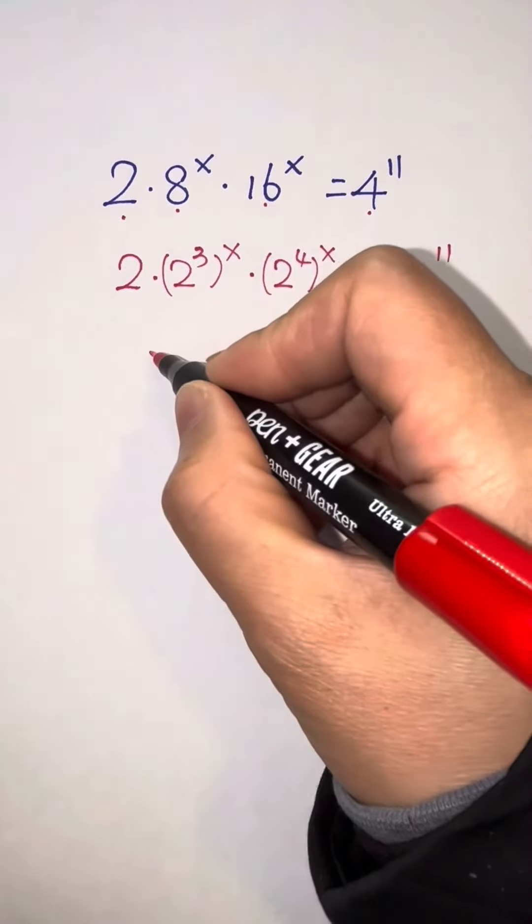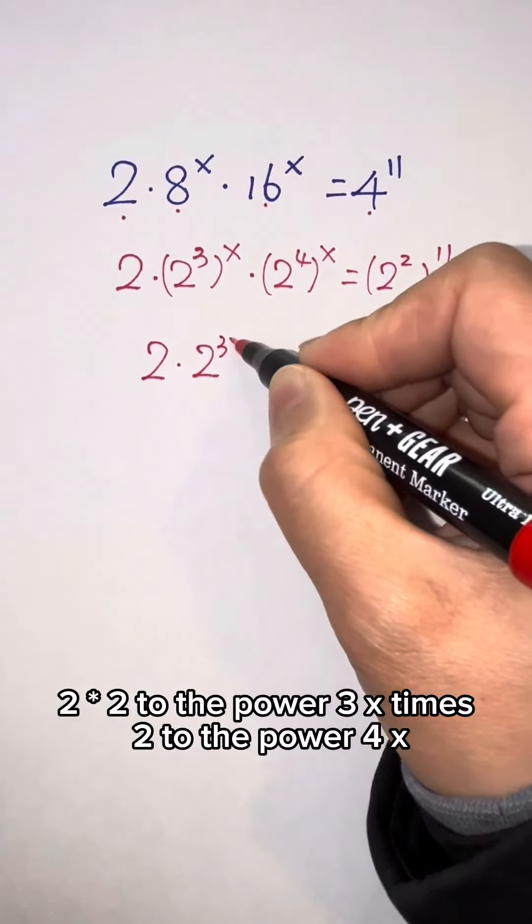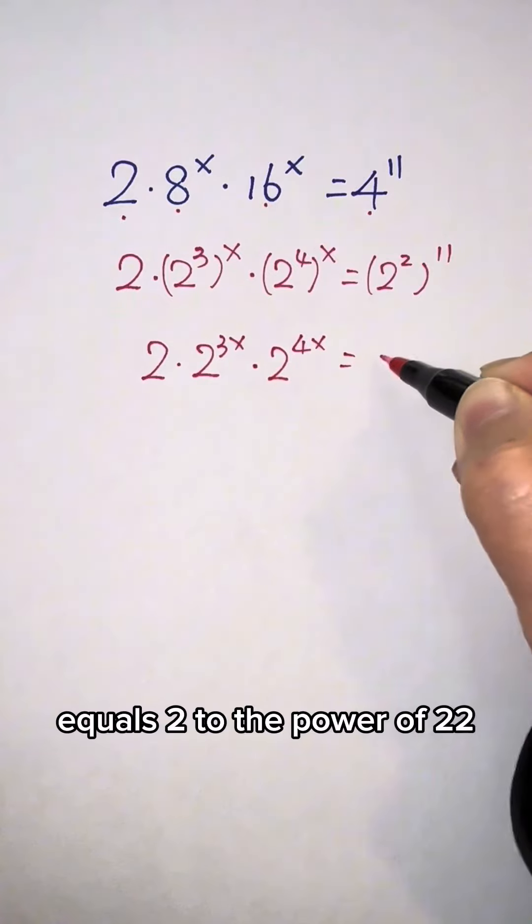And keep going. 2 times 2 to the power of 3x times 2 to the power of 4x equals 2 to the power of 22.